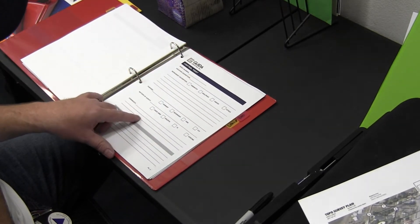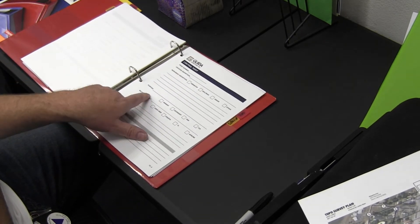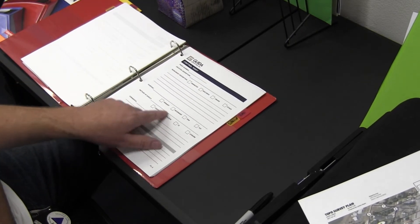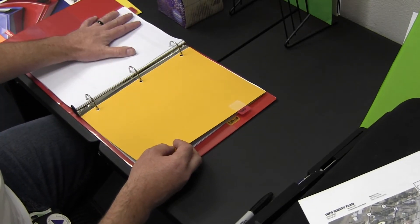For every control point you set, you fill out this sheet here. This is the control point sheet: point number, description, what you set, where is it at, what kind of control is it, what method did you use, and any comments you have. That's everything in the control section.